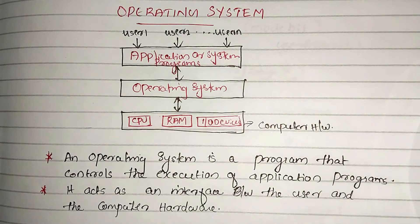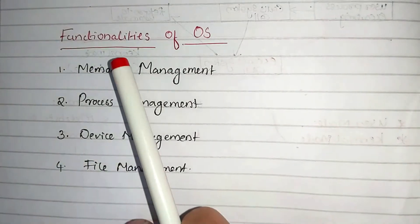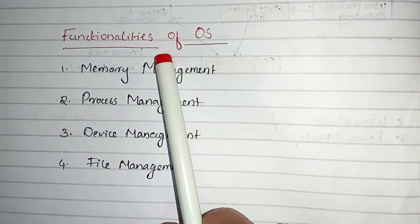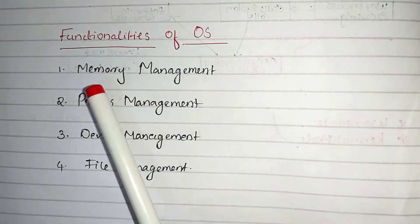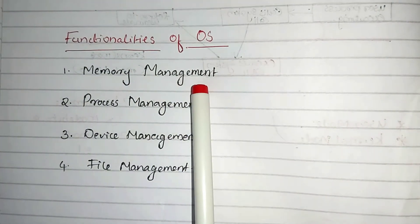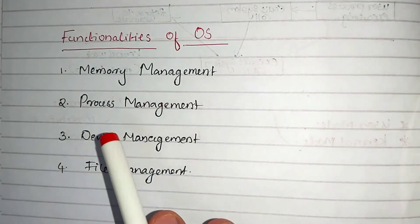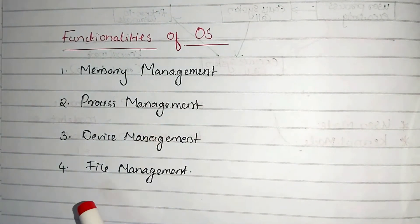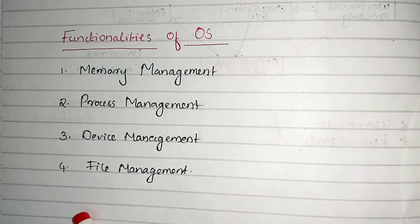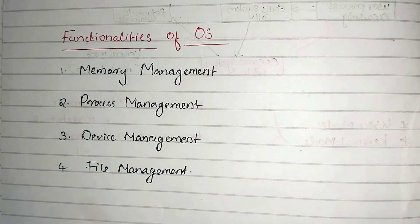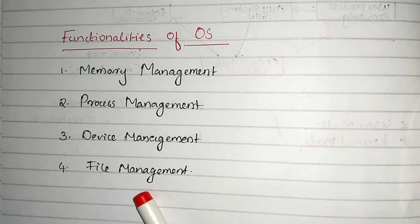Now we will discuss the functionalities of the operating system. The first functionality is memory management. When the user executes a program, it is loaded into primary memory and the process is called a process.